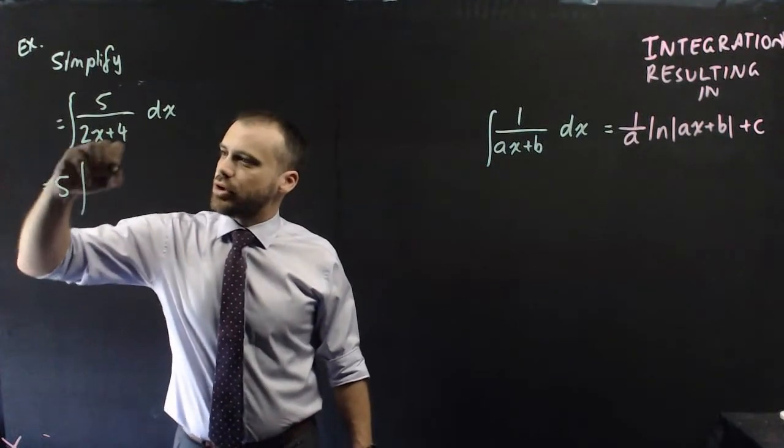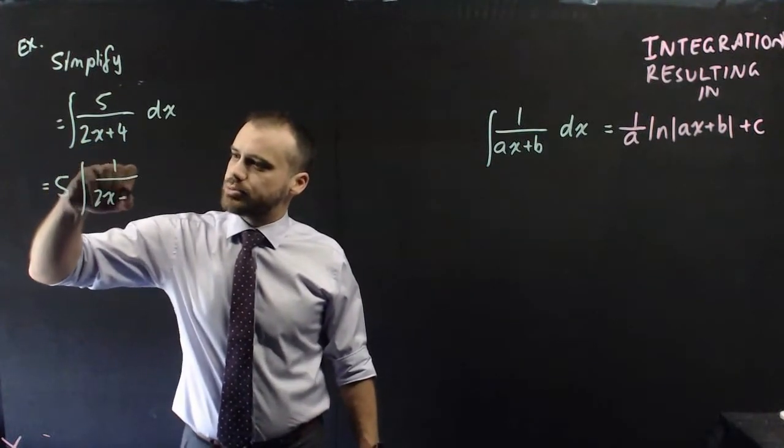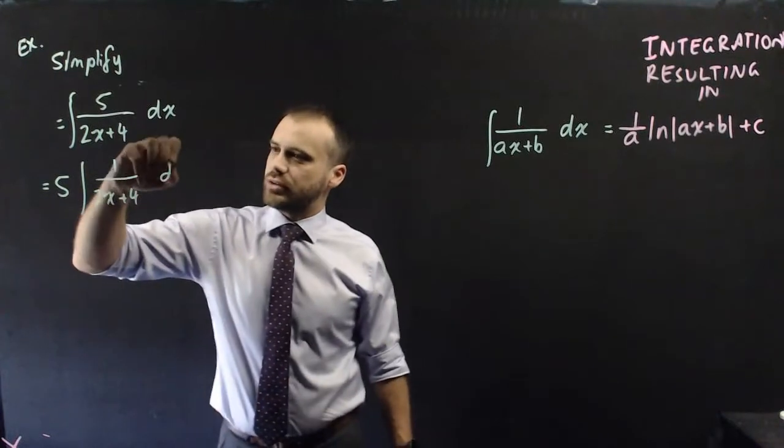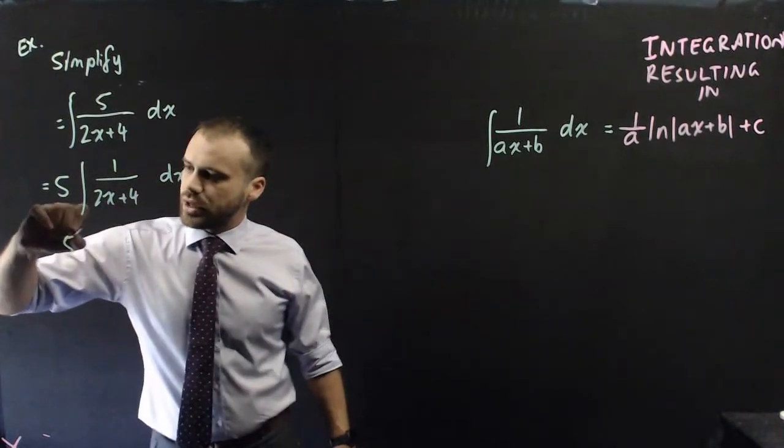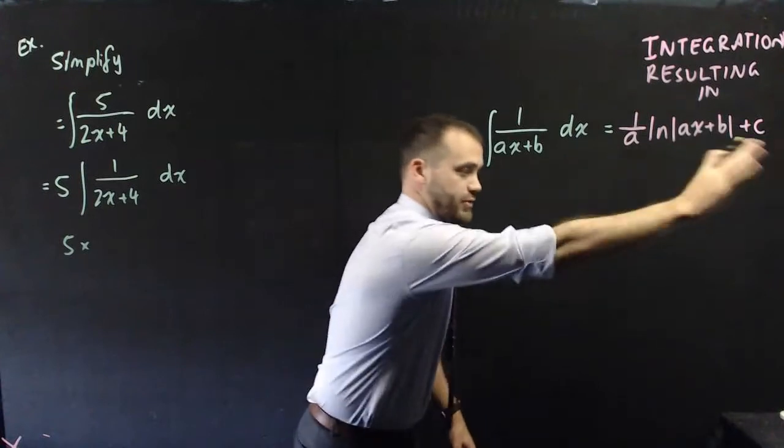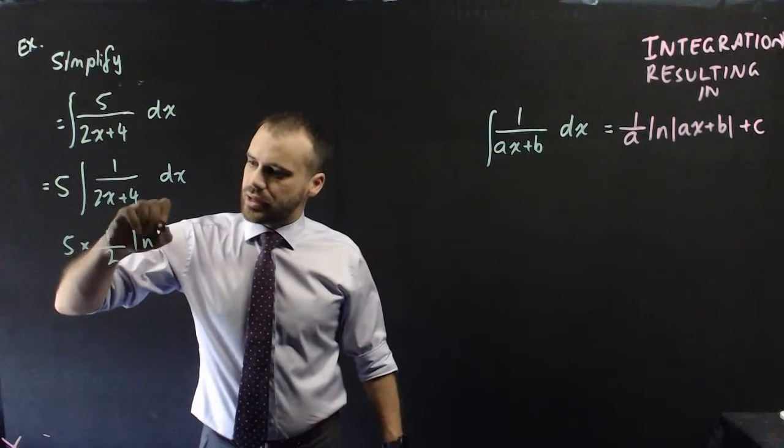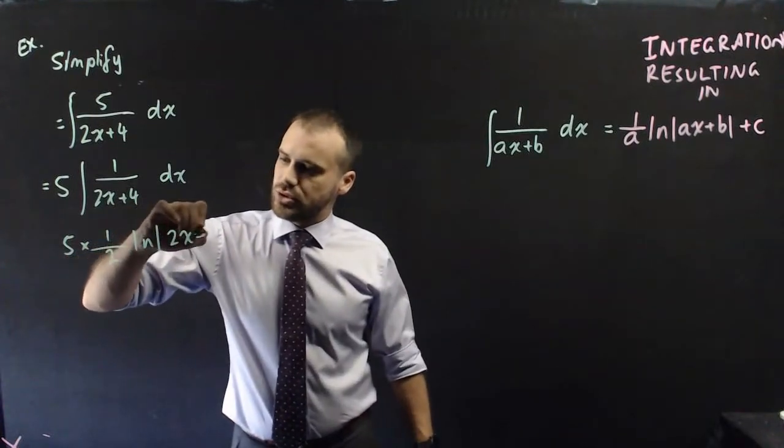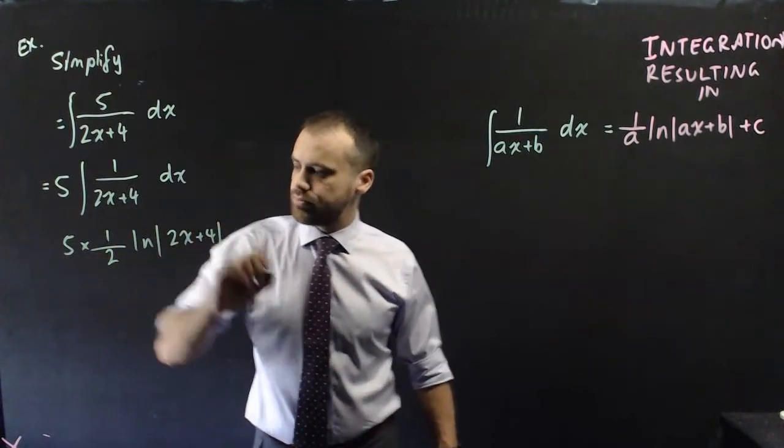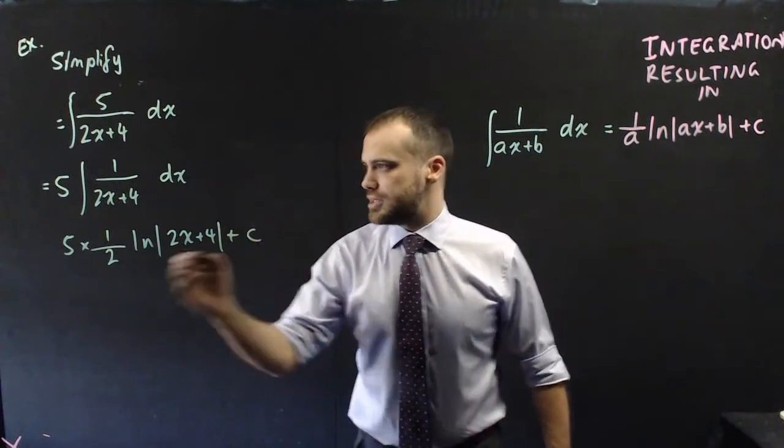I'll put my equal signs here. Rewrite it as 1 over 2x plus 4 with that 5 out the front. And now we'll get 5 times whatever's there. 5 times 1 over a ln absolute value 2x plus 4 and a c on the end.